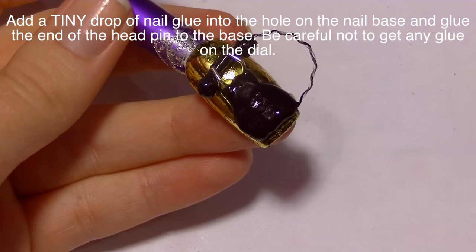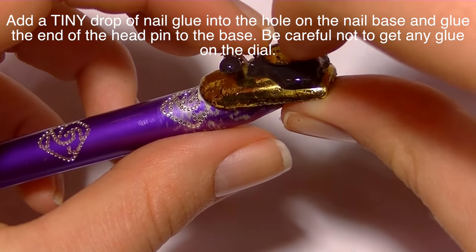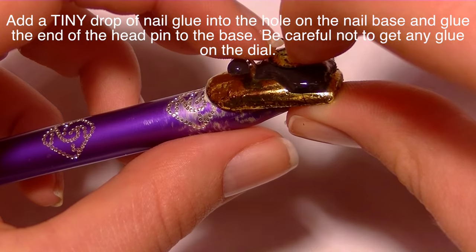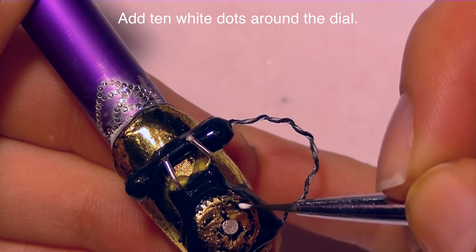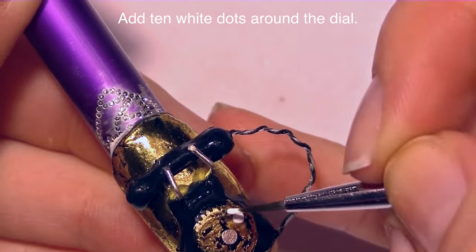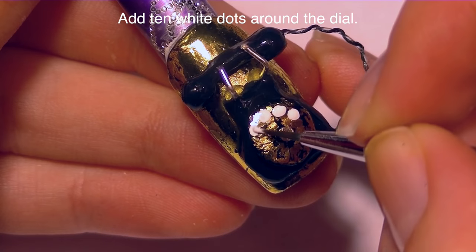Add some glue over the hole. Put your head pin inside of it and use the smallest amount of glue that you think is possible. Hold it there and try to keep the dial from getting glue on it because then it's not going to spin.